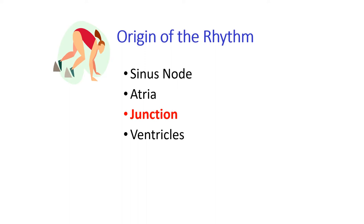In this slide, we see that we've already covered the sinus node and atrial dysrhythmias. Now we're going to cover junctional dysrhythmias and learn about all the characteristics of the beats that originate from the AV junction.